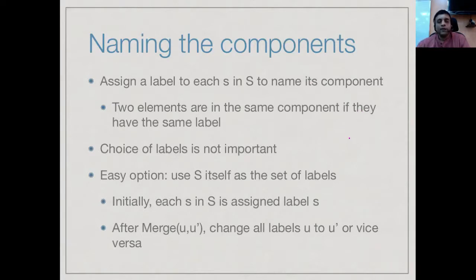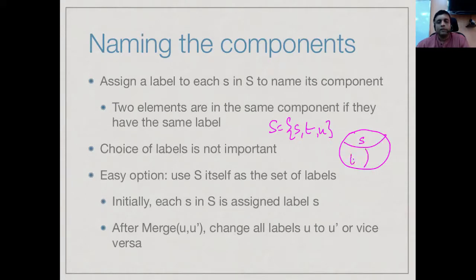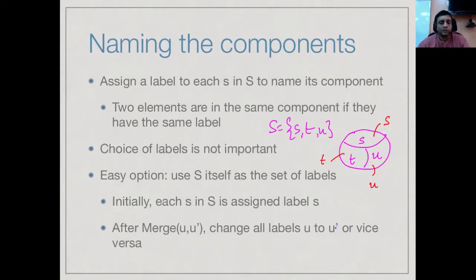Initially every element lies in a single partition. Suppose we have a set {S, T, U}; initially we have three partitions — one containing S, one containing T, one containing U — and we simply call them partition S, partition T, and partition U. When we merge two partitions, say T and U, the label must be the same for both. We might take element U and relabel it T, so both U and T now belong to the partition labeled T.